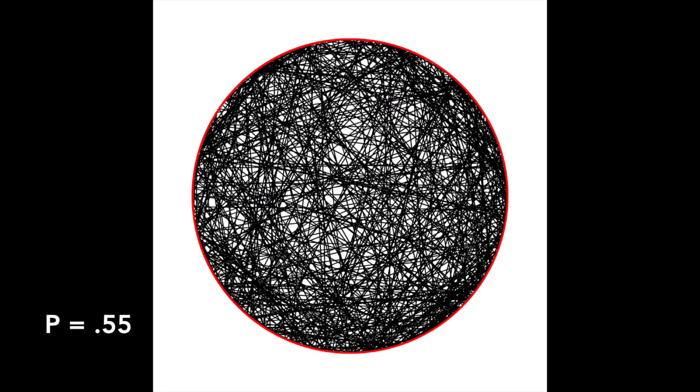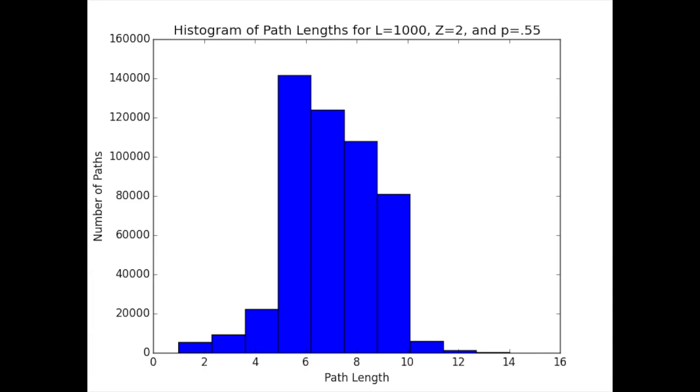If the probability is 0.55, the average path length is about 6. This situation can be thought of as 6 degrees of separation, a phrase commonly used to describe the interconnected nature of human acquaintances. Looking at the network, it looks very dense and connected.